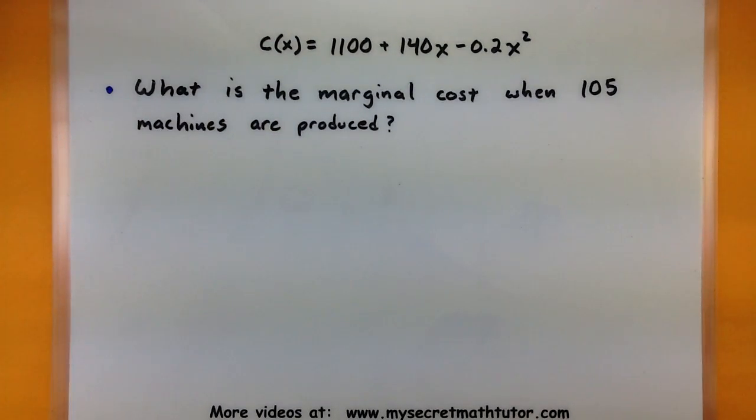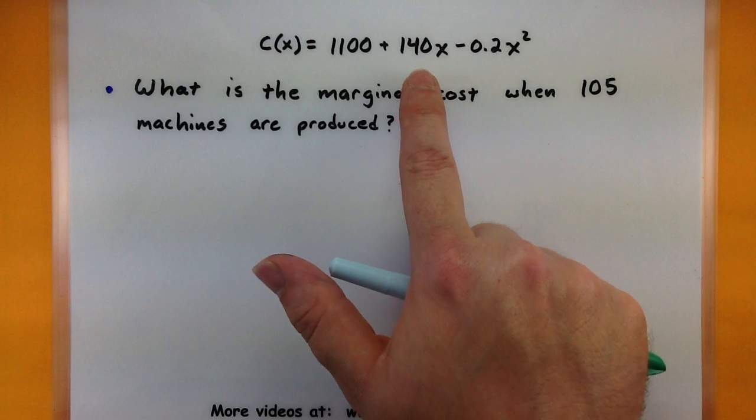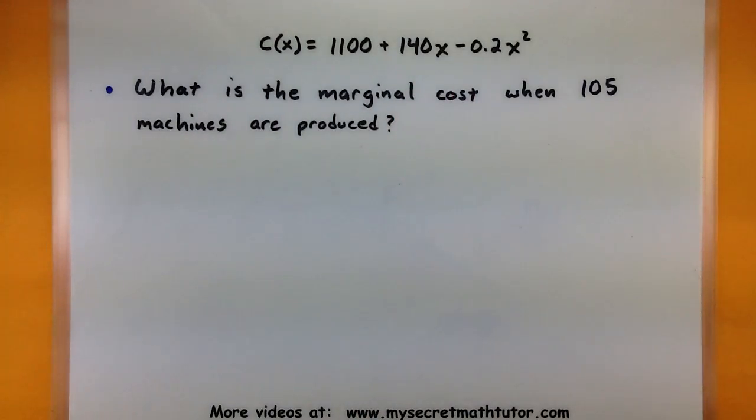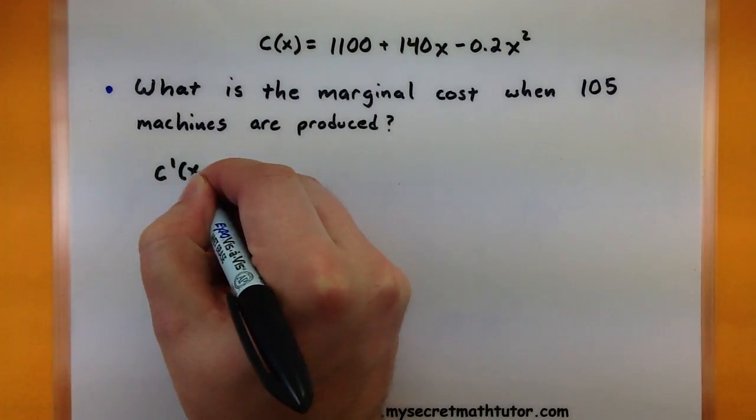In this one we have the cost of producing machines and that's given by 1,100 plus 140x minus 0.2x squared. So here x represents the number of machines we're producing and the function simply returns our cost. The question is what is the marginal cost when 105 machines are produced? So just like I mentioned before, we want to figure out what is the derivative of our cost.